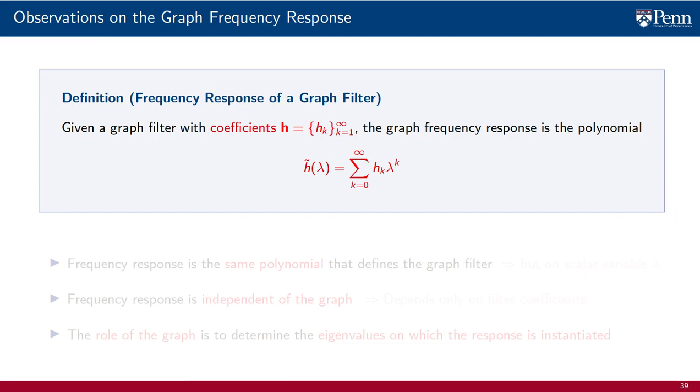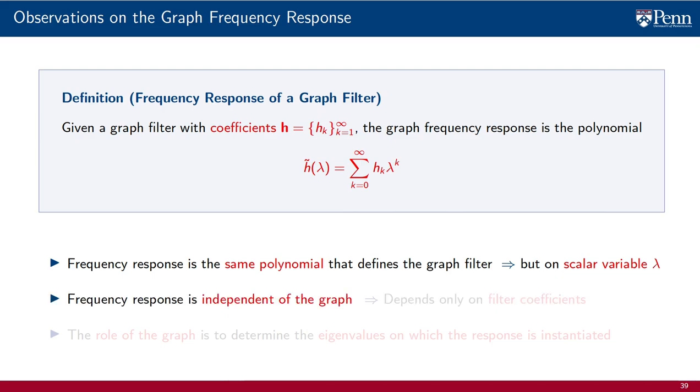Some observations are in order about this definition. As we have already pointed out, we emphasize that the frequency response is the exact same polynomial that defines the graph filter, except that instead of being a polynomial on the shift operator, it is a polynomial on a scalar variable lambda. A second observation that follows from this one is that the frequency response is independent of the graph. This is a very important observation that bears repetition. The graph frequency response does not depend on the specific graph. It is completely determined by the filter coefficients.